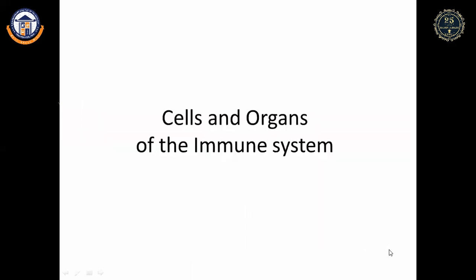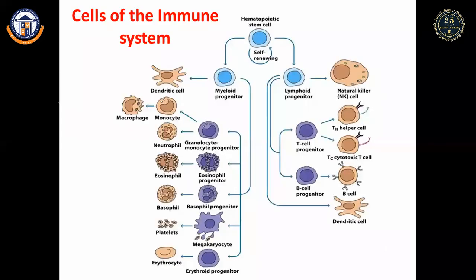Now let's discuss the cells and organs of the immune system. Hematopoietic stem cells produce myeloid progenitors and lymphoid progenitors. Lymphoid progenitors give rise to T cells, B cells, dendritic cells, and natural killer cells. Myeloid progenitors give rise to monocytes, granulocytes (neutrophils, eosinophils, basophils), and erythrocytes.